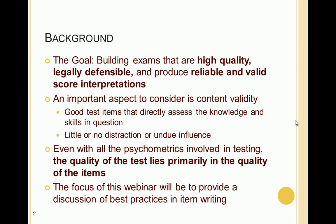The goal, of course, is building exams or tests that are high quality, legally defensible, and produce reliable and valid score interpretations. An important aspect to consider is content validity, which refers to the actual content or the items of the test. We need good test items that directly assess the knowledge or skills in question and provide little or no distraction or undue influence — which in testing parlance is called construct irrelevant variance. Even with all the psychometrics and advanced mathematics involved in testing, the quality of the test still lies primarily in the quality of its items.